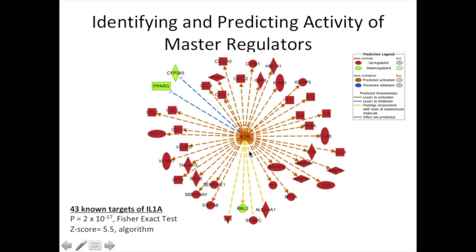Not only that, we know a lot about these master regulators. Anything with an orange line means interleukin 1A is known to induce that target; anything in red is going up. Anything with a blue line means interleukin 1A is known to inhibit; anything in green is going down. The only things not representing a more active interleukin 1A signature are four genes. Given this result, I'm very confident that not only is interleukin 1A playing a role in my system — even though I might not measure it directly — but I'm very confident it's more active. And that's huge.